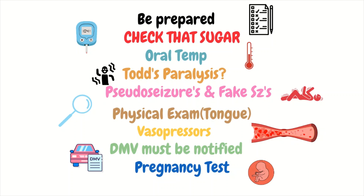Make sure to look at the tongue to ensure you did not miss trauma. Evaluate for incontinence. Don't forget to think about vasopressors during and after intubation related to possible hypotension. Know that the DMV must be notified of the patient's seizure — although this falls on the provider, ensure it does happen. And as always, perform a pregnancy test on any woman of childbearing years.